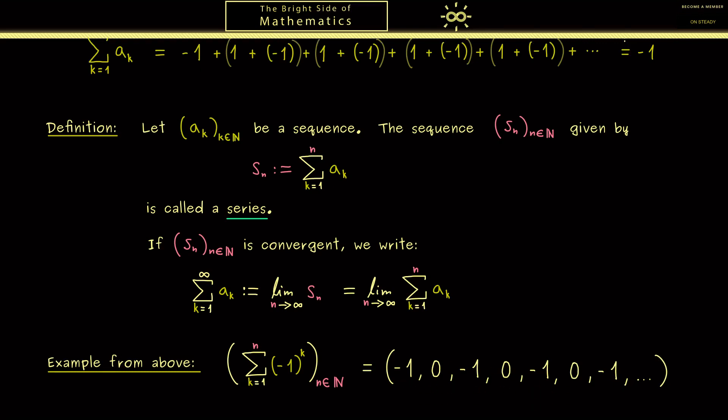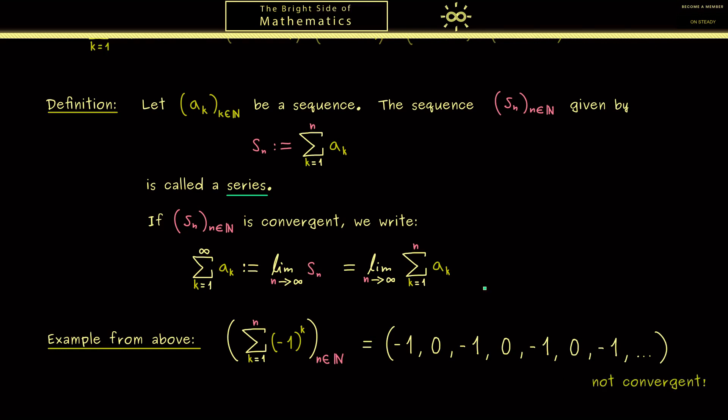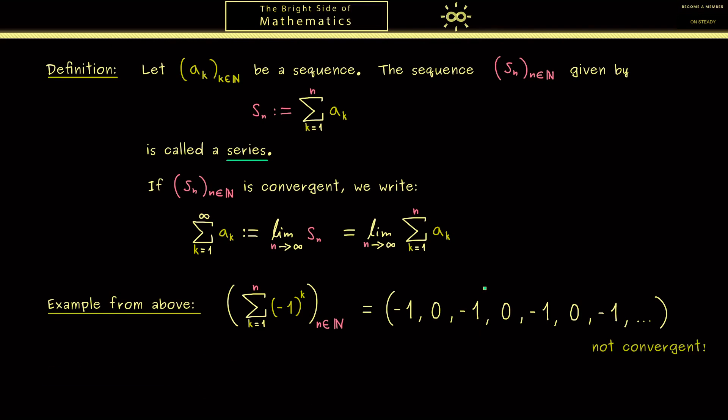Ok maybe for closing this video also another example would be helpful. Ok here I want to ask the question what happens when we put in plus 1 instead of minus 1. Of course then the power k does not matter at all because we always get out 1. Therefore for our sequence of partial sums we get out 1 then 2 then 3 and so on. Obviously this is also a sequence that is not convergent. However we could say it's divergent to infinity.